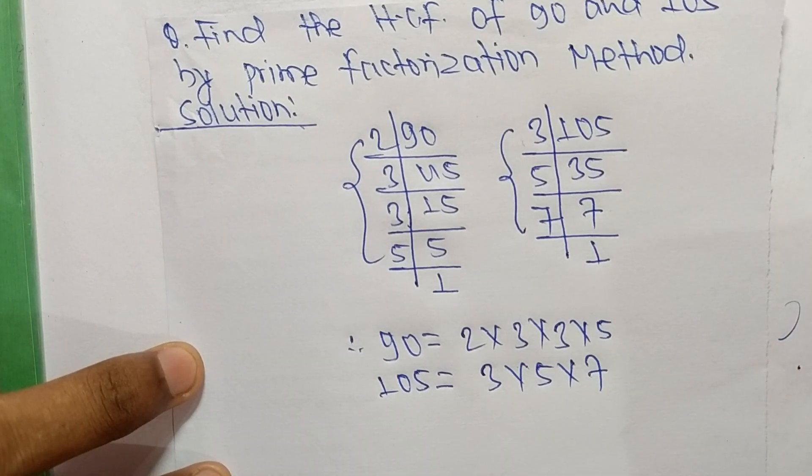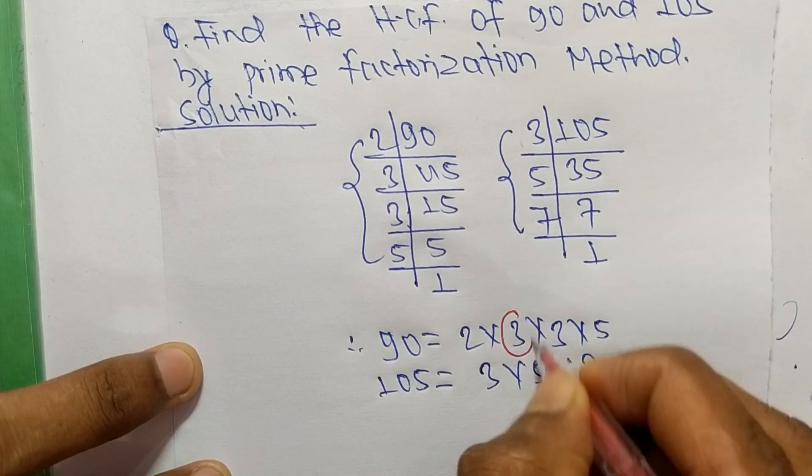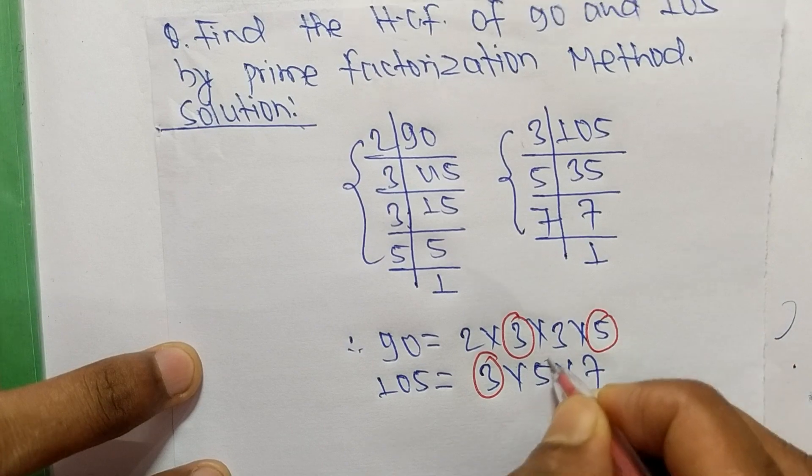So now we select the common factors in this prime factor. So common here is 3 and second common is 5.